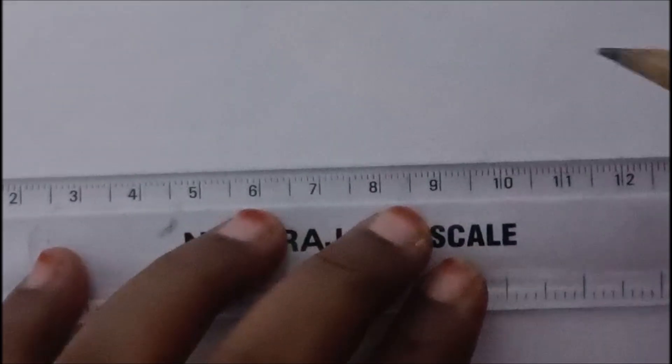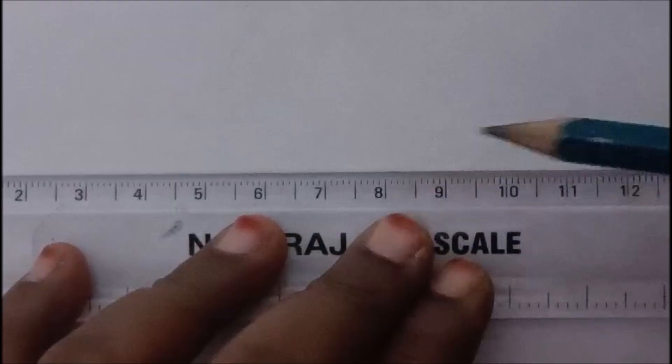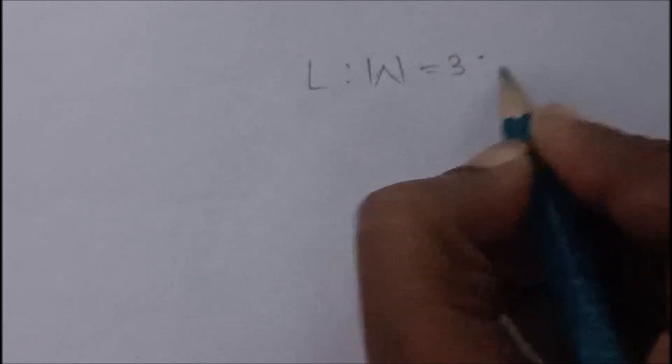Today we are going to discuss how to draw arrowheads and dimension lines in engineering drawing. For drawing arrowheads, take the scale and the arrow size should be 3 is to 1, that is length to width ratio. Length to width ratio should be 3 is to 1.